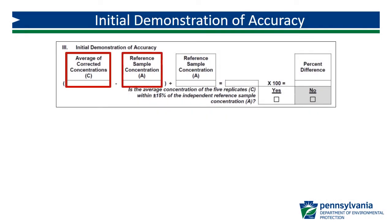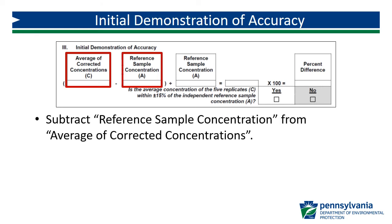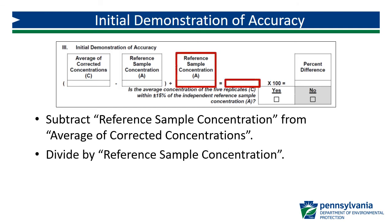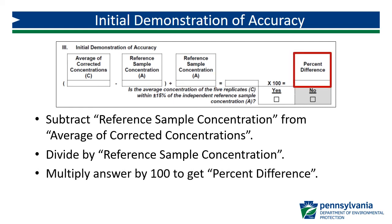Transfer the values for average of corrected concentrations and reference sample concentration into their respective fields. C is the average of corrected concentrations and A is the reference sample concentration. Subtract the reference sample concentration, A, from the average of corrected concentrations, C. Divide this result by the reference sample concentration, A, and record the value. Multiply this result by 100 to determine the percent difference.